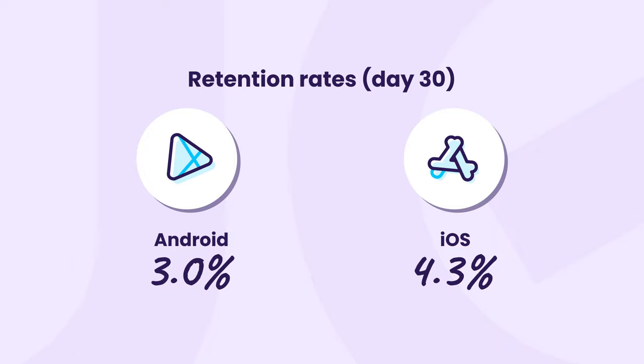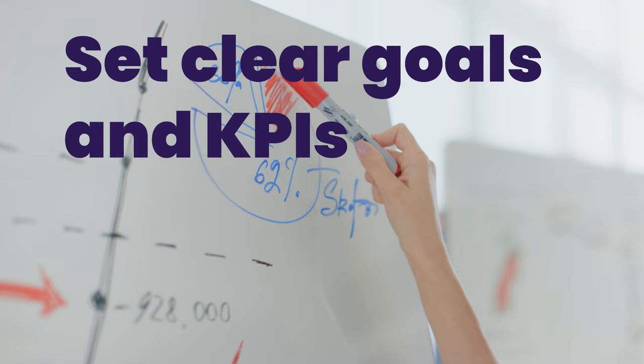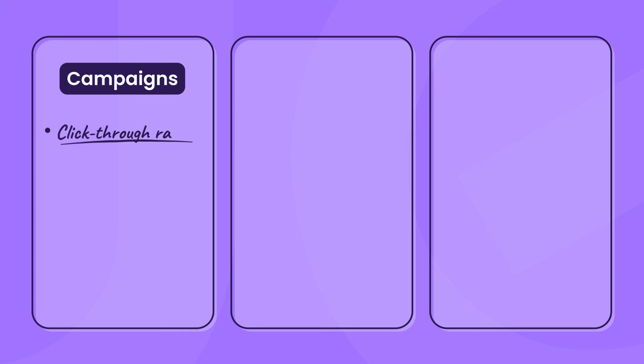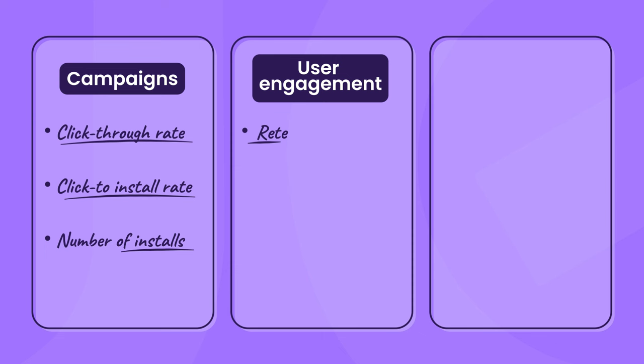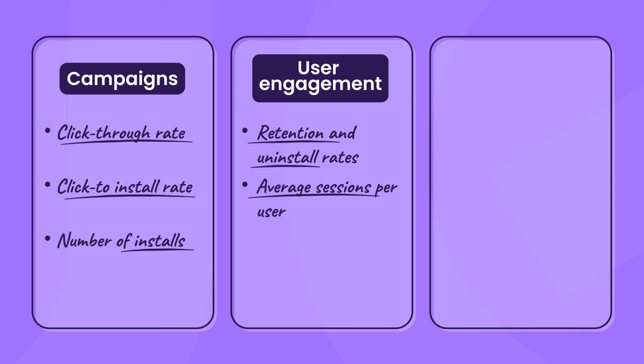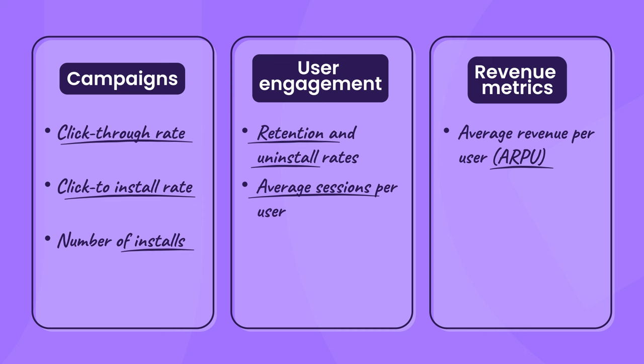So you've got an idea of who your app is for and how it'll drive revenue. Next is step number four: define success. How will you know if your app launch is successful if you don't measure it? Retaining users is a major challenge for any app marketer, with Android retention rates at just under 3% at day 30, and iOS at 4.3%. Make sure to set clear goals and KPIs so you can monitor what is and isn't working, and optimize accordingly. For your campaigns, we're talking mainly about monitoring click-through rate, click-to-install rate, and the number of installs. For user engagement, you can start by measuring retention and uninstall rates, as well as the average sessions per user. And last but not least, you need to calculate your revenue metrics, including the average revenue per user, cost per install, and ultimately return on ad spend.